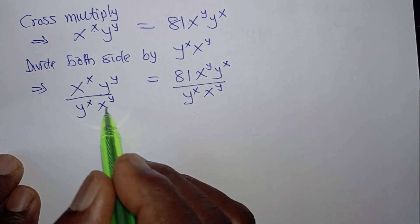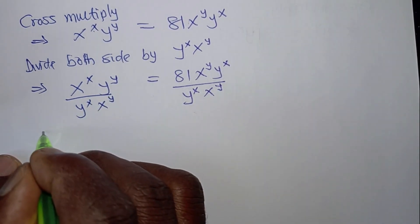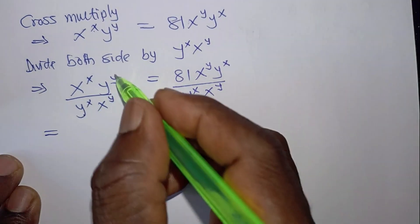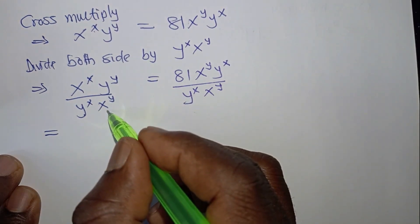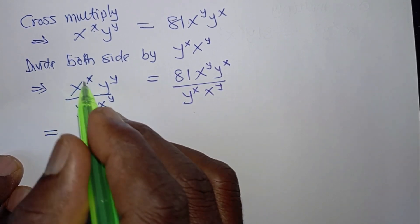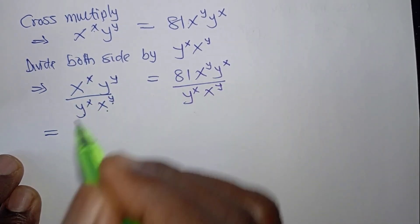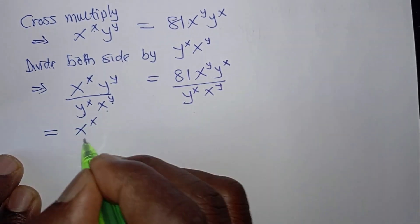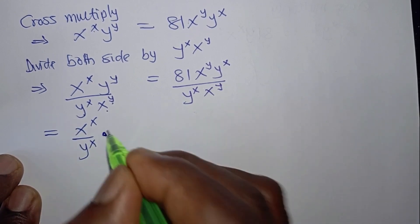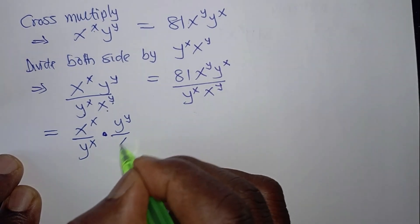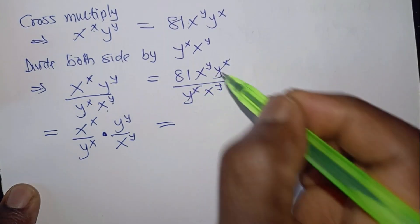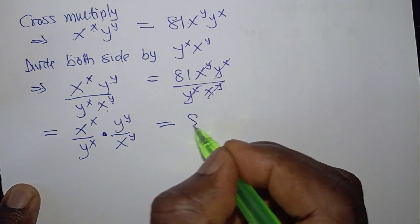Let's rearrange this expression. You see that we have x to the power x over y to the power x, then we will have y to the power y over x to the power y. From the top, both expressions here have an exponent of x, and this one has an exponent of y. So we can break this as x to the power x divided by y to the power x, multiply by y to the power y over x to the power y. It equals 81 — x to the power x will cancel x to the power x, y to the power y will cancel y to the power y. It equals 81.